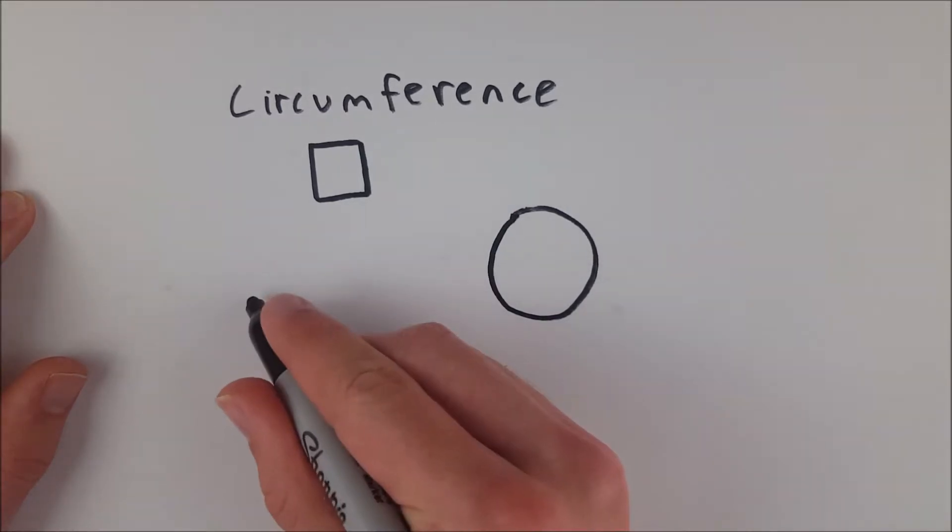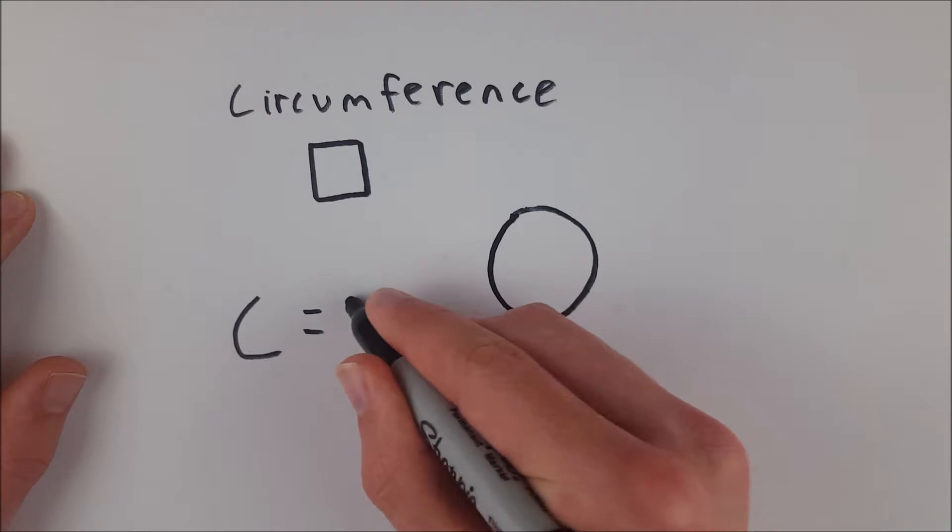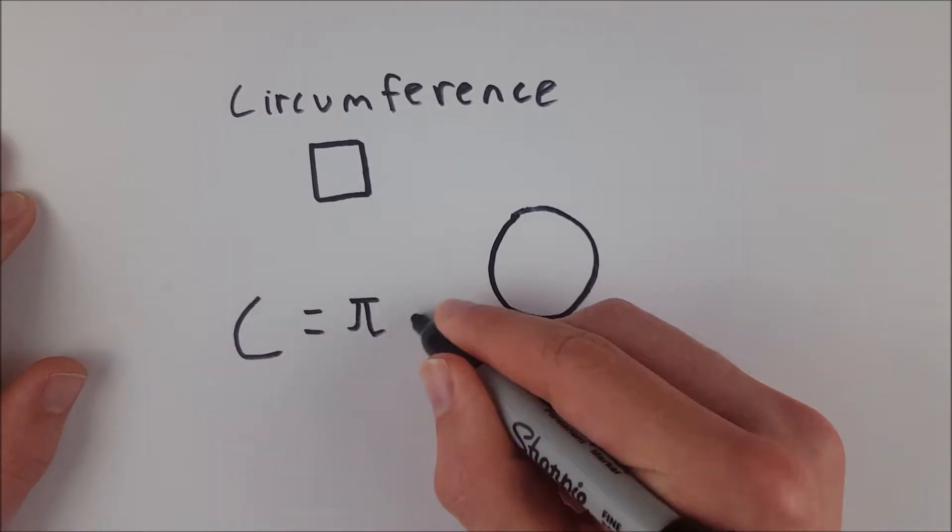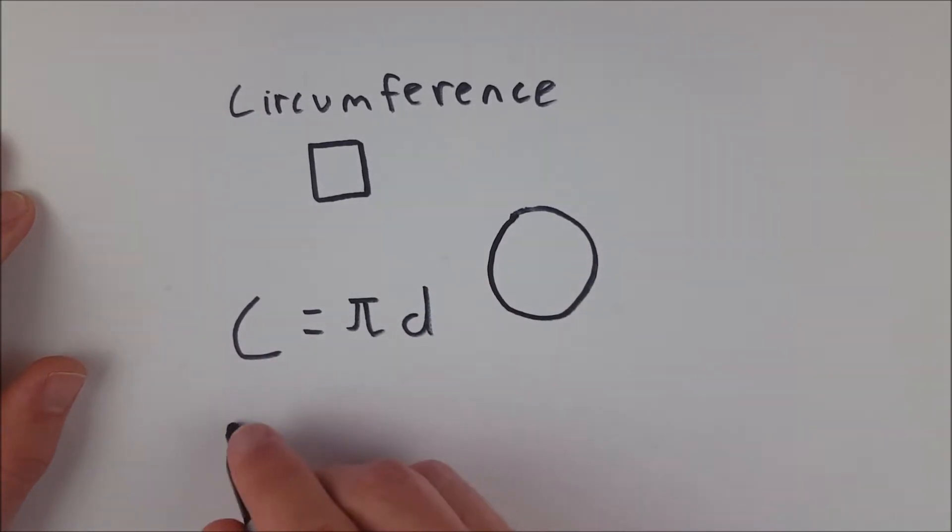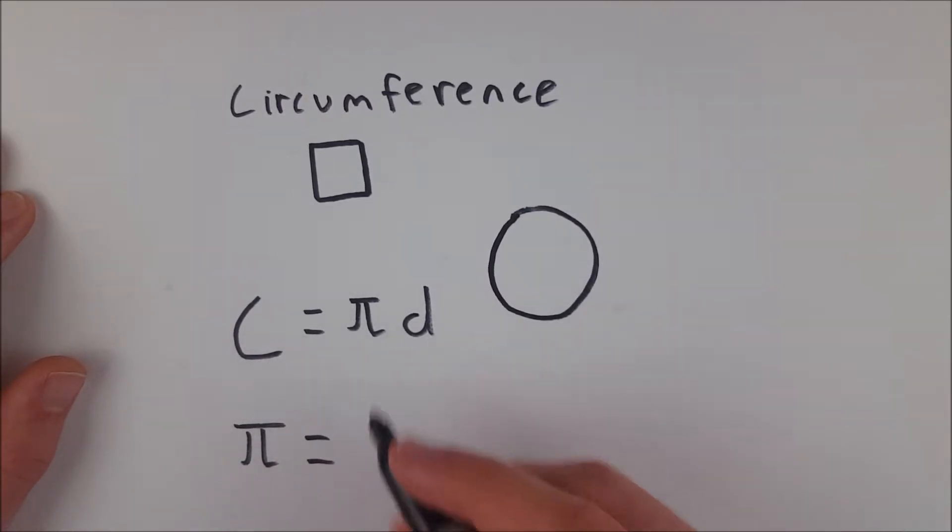And the circumference, we'll denote with a big C, is equal to pi times the diameter. And this is because pi, the irrational number pi, is defined by the ratio of the circumference of a circle to the diameter of a circle.